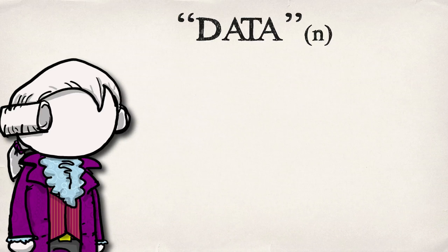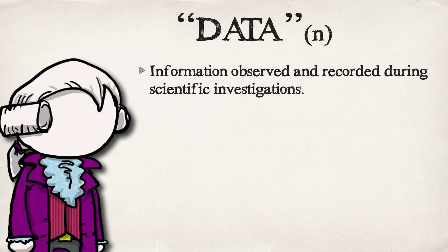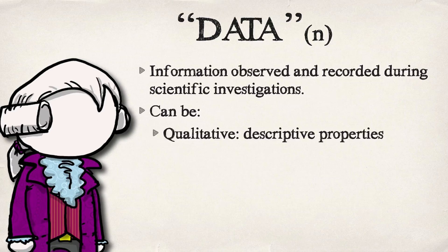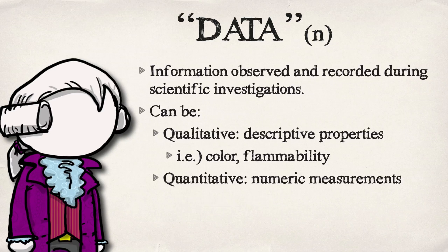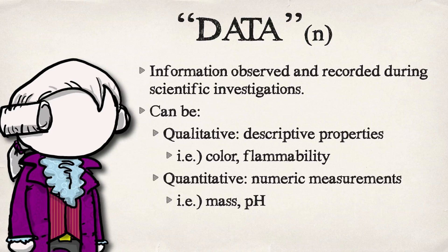The information observed and recorded during scientific investigations is called data. This can be qualitative or quantitative — most of you have probably heard these terms before. Quantitative deals with numbers, qualitative deals with properties. So the color of something would be qualitative, while a measurement like pH or mass would be quantitative.